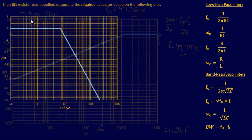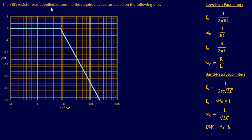Let's do another example. Given an 8 ohm resistor, we need to determine the required capacitor based on the following Bode plot. Looking at the magnitude, at lower frequencies it seems to be passing them all, and then as it gets higher it drops off or rolls off at 20 decibels per decade — which tells us this is a low pass filter because it passes only the low frequencies.